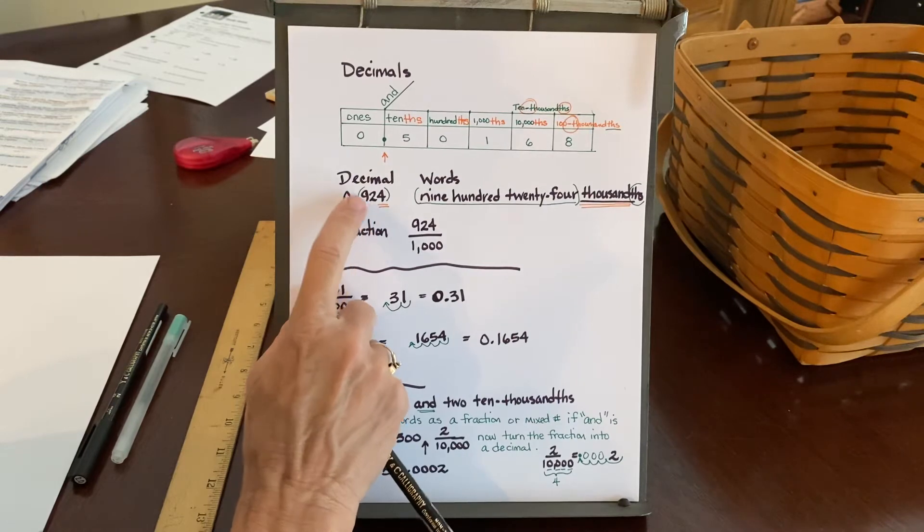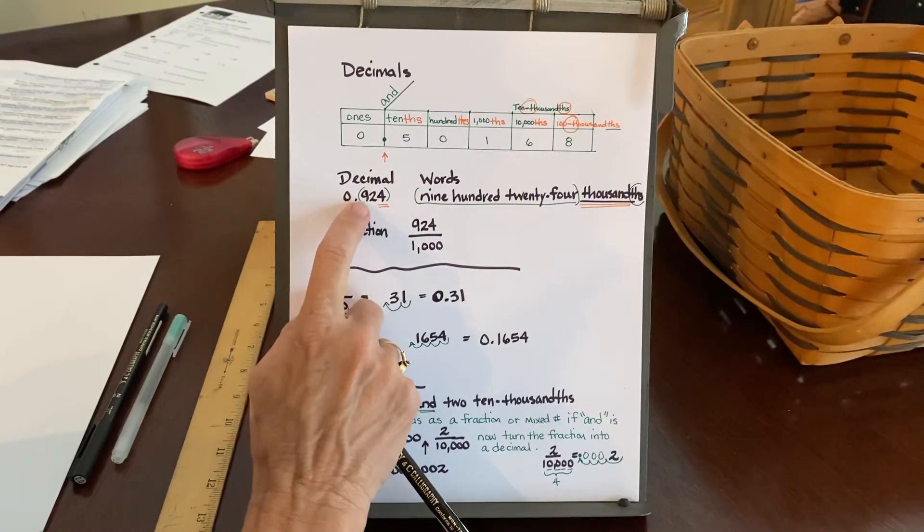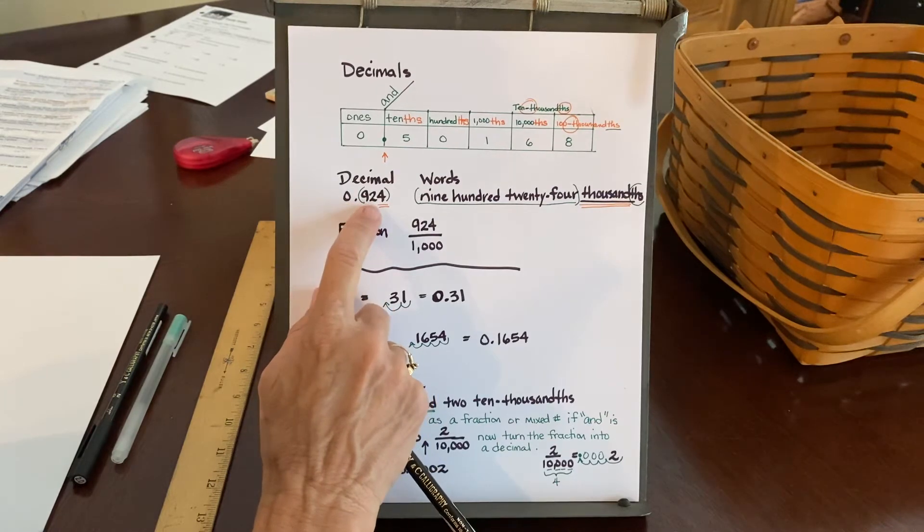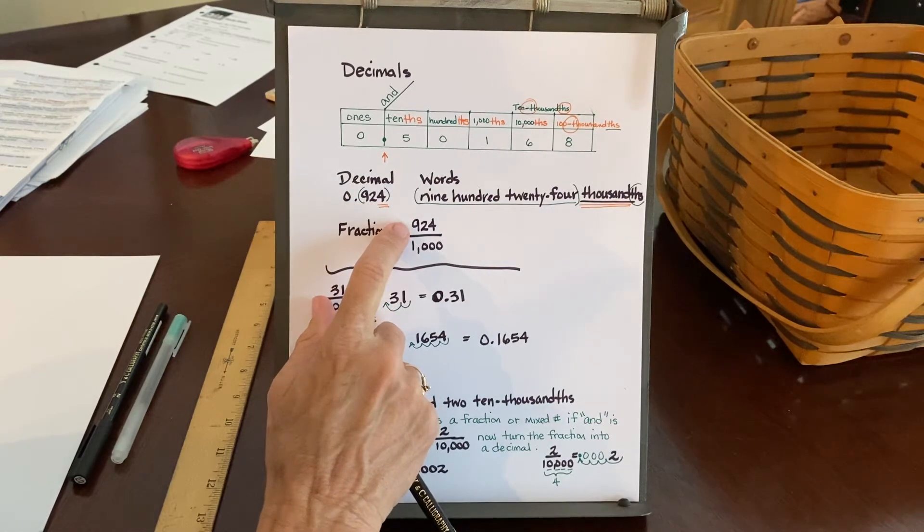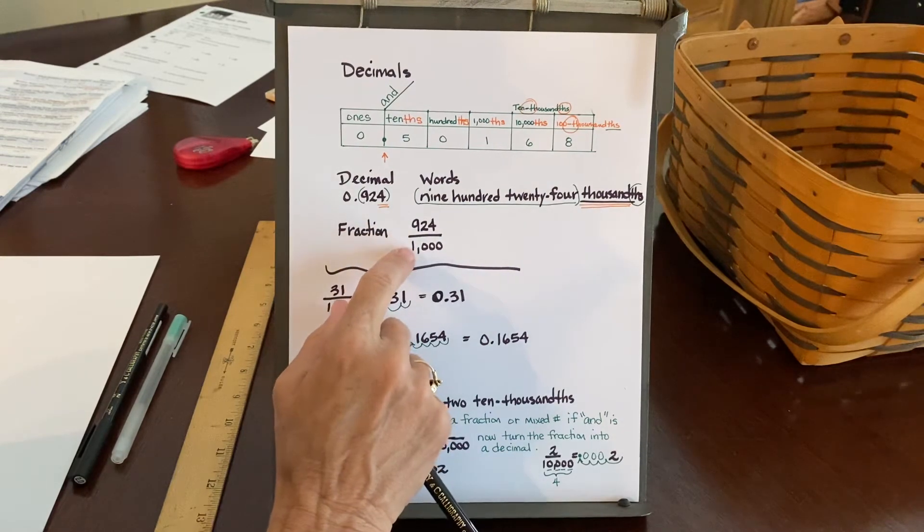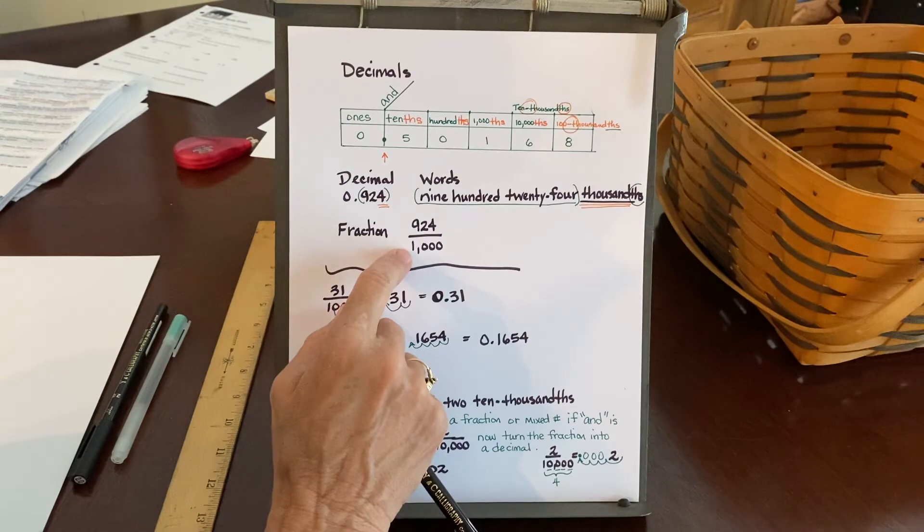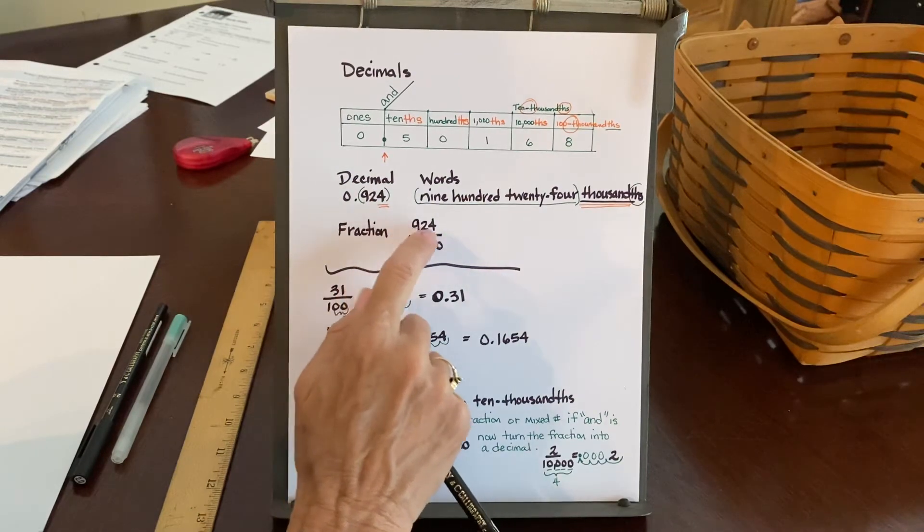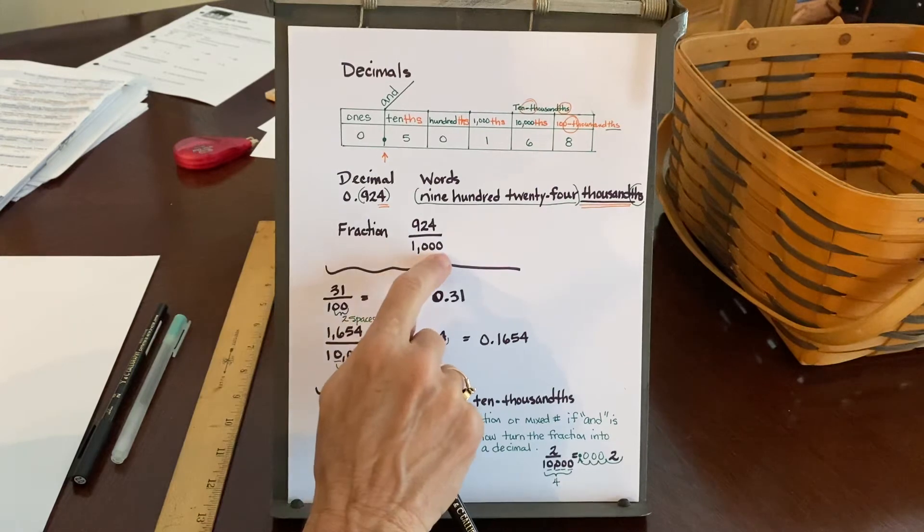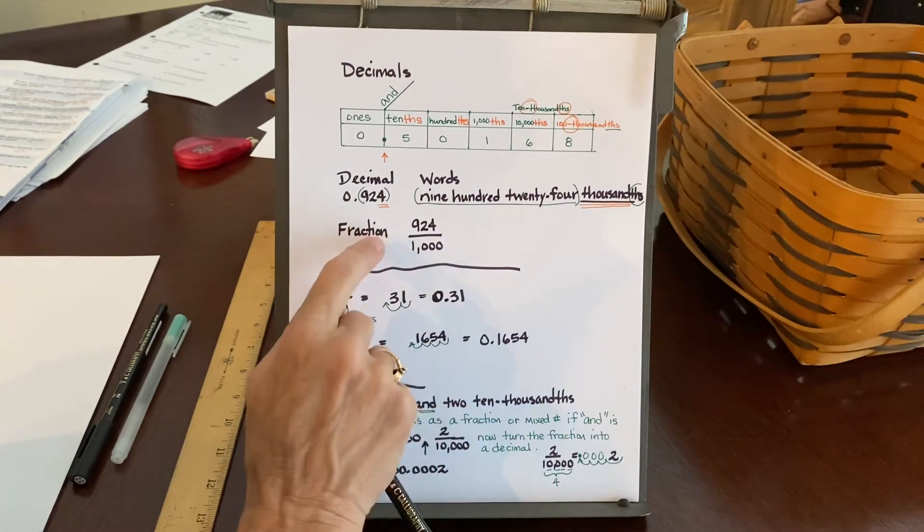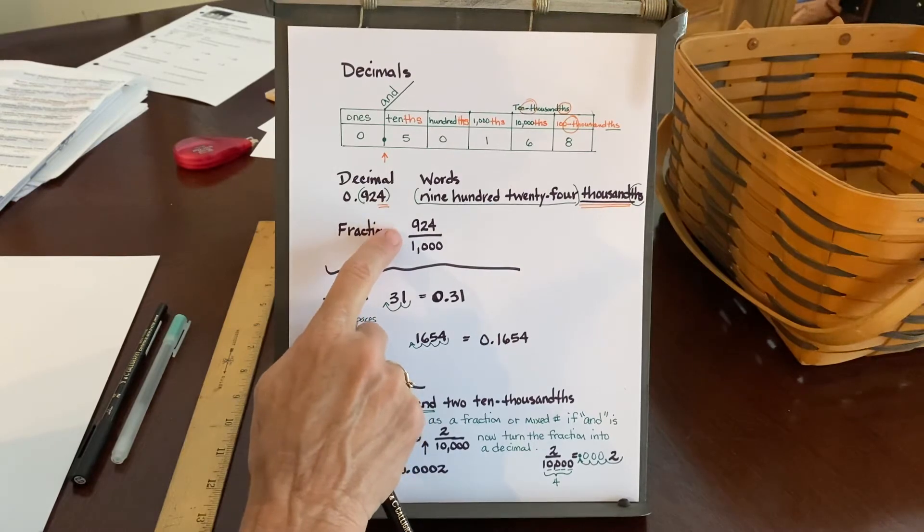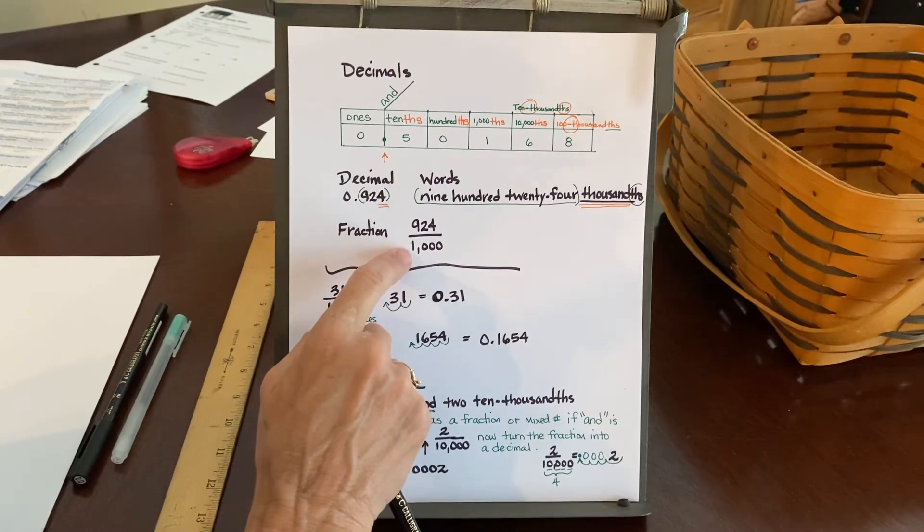So if I look at my original decimal, which was 0.924, I have three decimal places. So I put 924 in the numerator of the fraction. I draw the fraction bar. And then in the denominator, I write the number 1. And because there were three digits in that number 924, I put three zeros. So then it's very easy to read the fraction of 924 over 1,000.